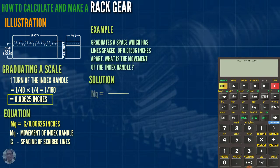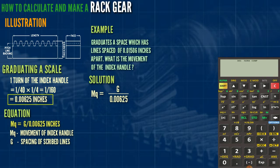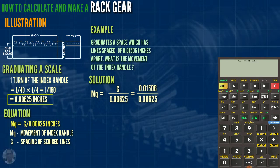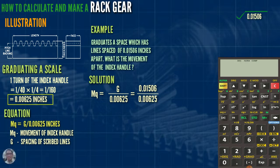Solution: MQ equals G over zero point zero zero six two five. G equals zero point zero one five zero six inches, then divided by zero point zero zero six two five inches. So we calculate zero point zero one five zero six divided by zero point zero zero six two five.